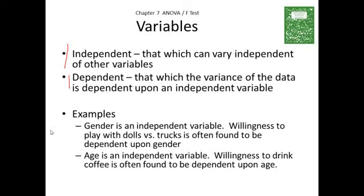Here's an example. Gender is typically an independent variable — not something you can actually control, you simply have a gender. The willingness to play with dolls versus trucks in market research is often found to be dependent upon gender. There seems to be some relationship between gender and your desire to play with dolls or trucks as a small child.